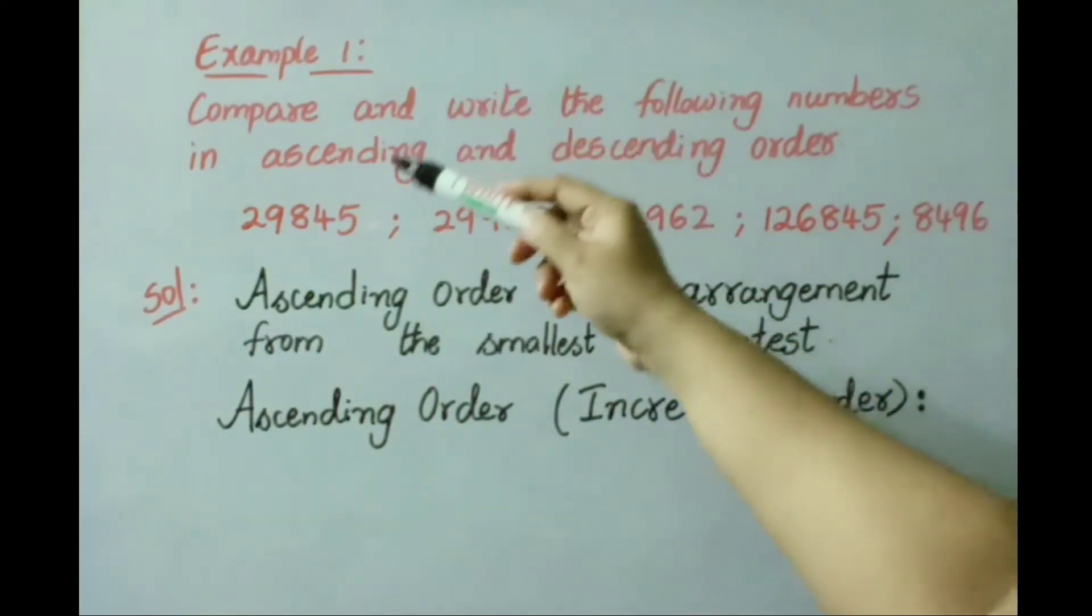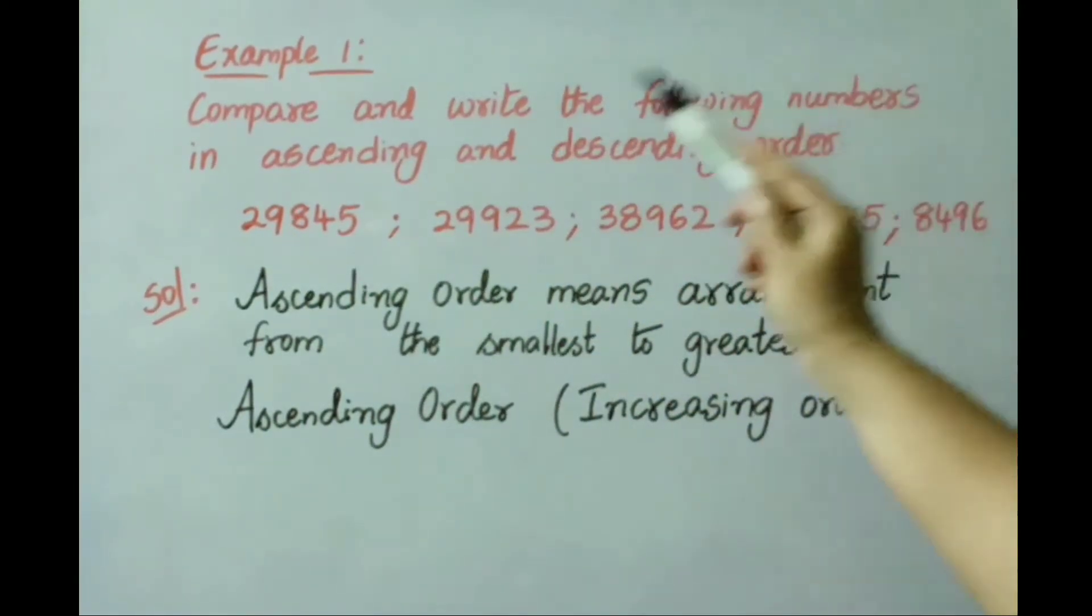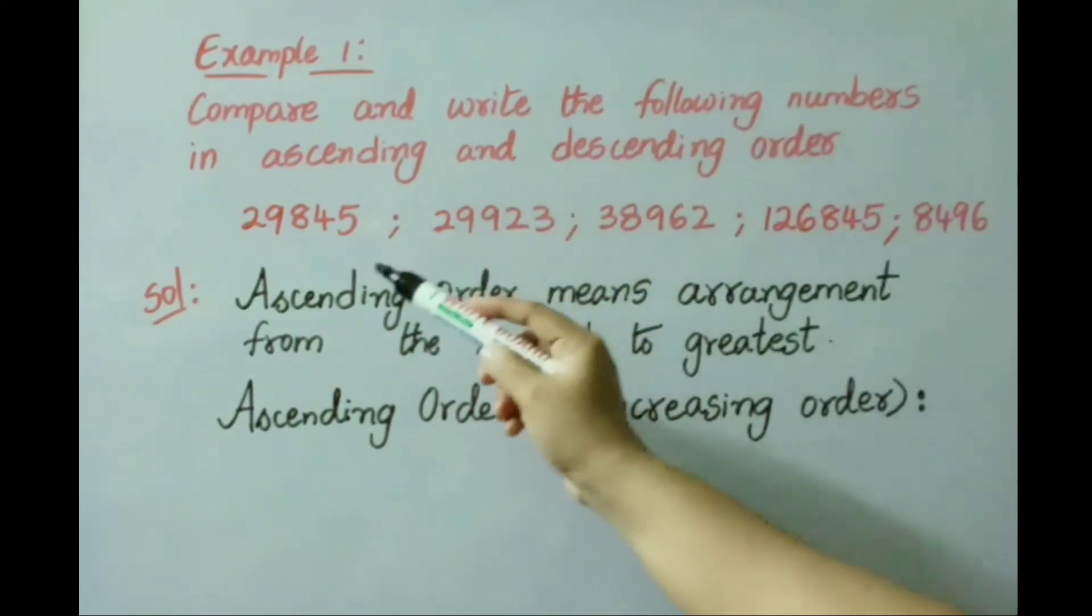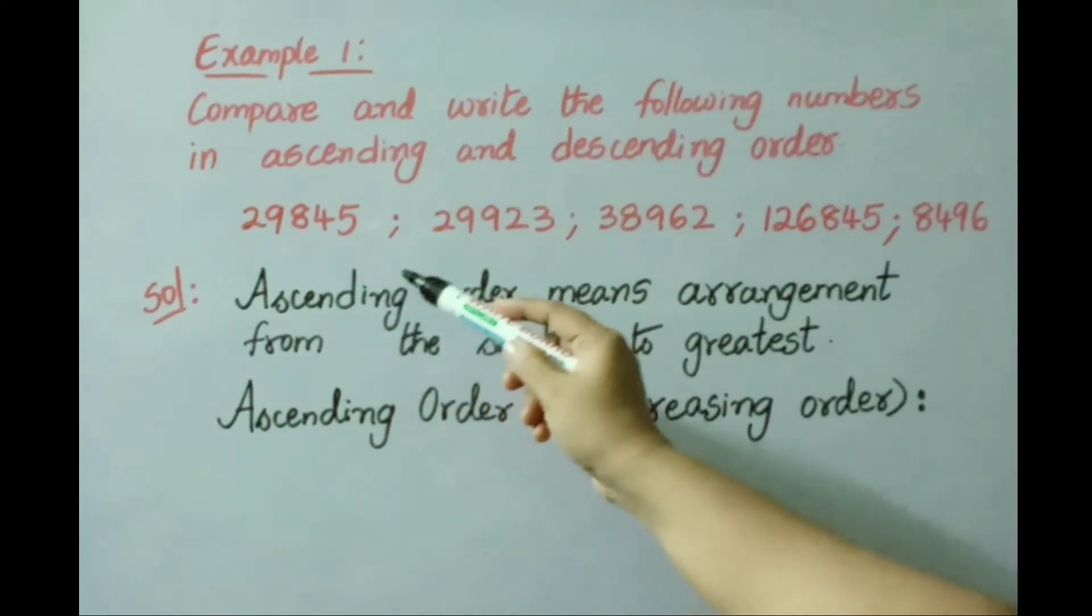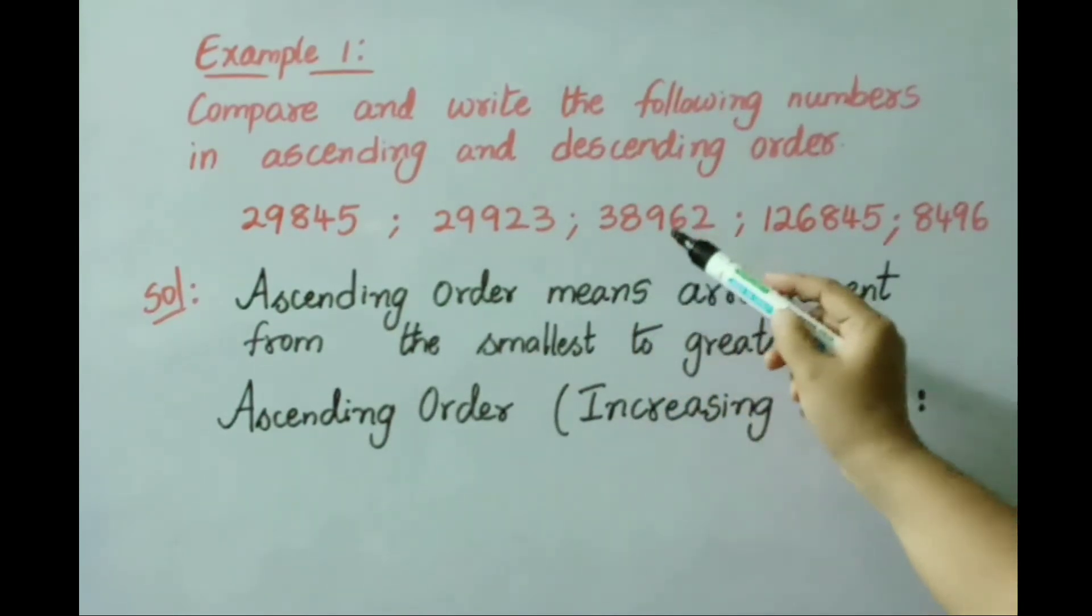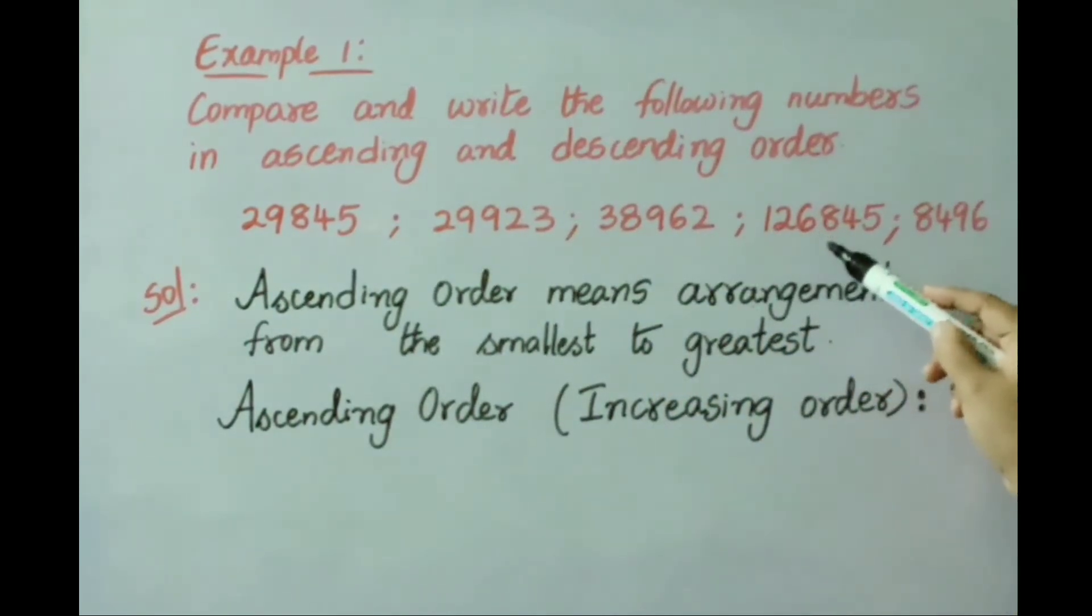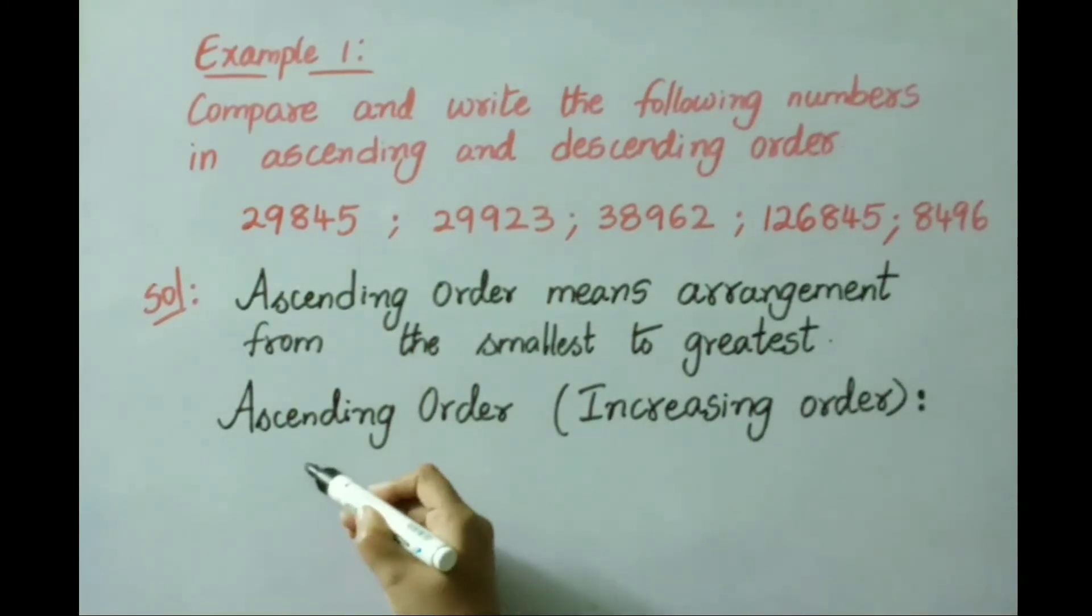See now Example 1: Compare and write the following numbers in ascending and descending order. The numbers are 29,845; 29,923; 38,962; 1,26,845; and 8,496. First we are going to arrange the numbers in ascending order. See the solution: ascending order means arrangement from the smallest to greatest value, so ascending order can also be called increasing order. Here least value is a 4-digit number, so write that number first: 8,496.